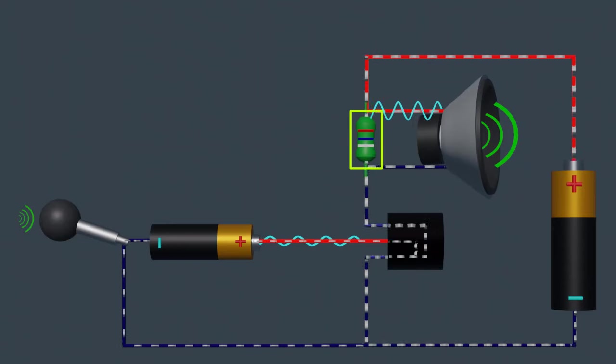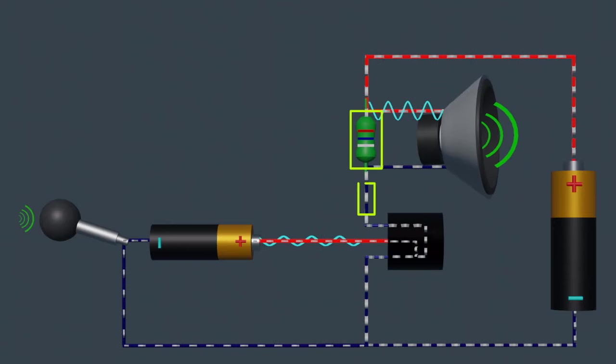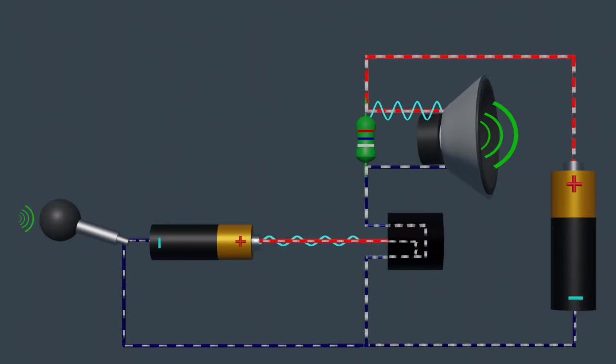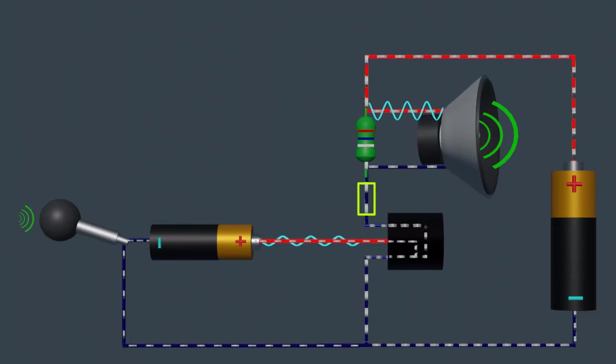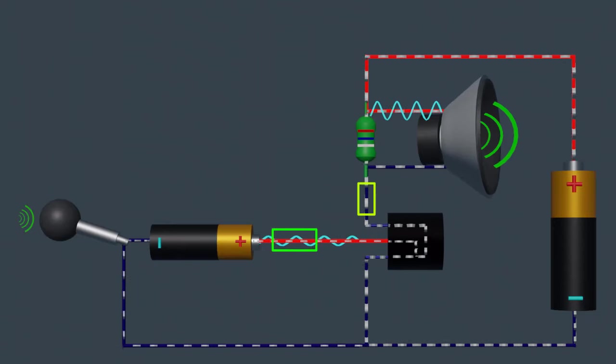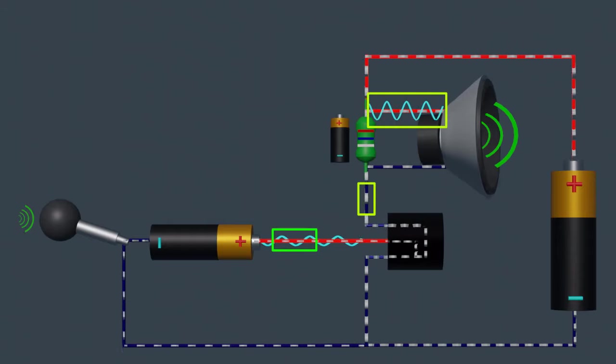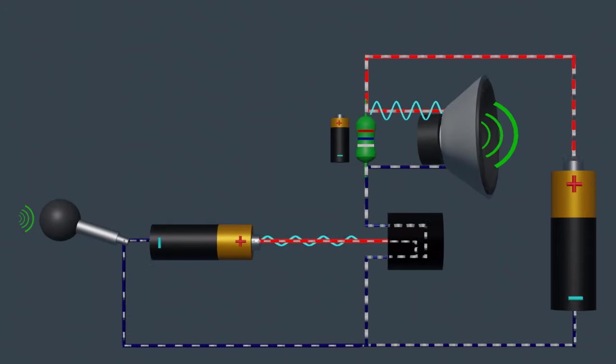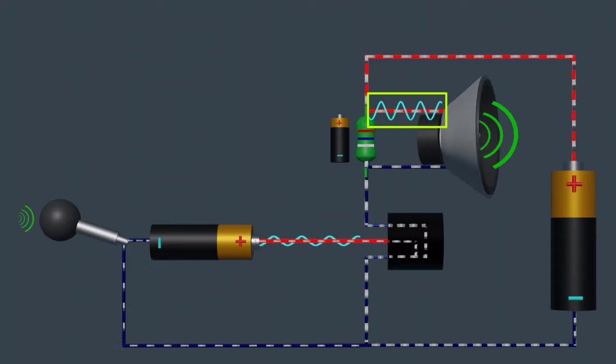To extract the amplified signal, a load resistance is connected in series with the collector terminal. The varying collector current, modulated by the input signal, results in a varying voltage drop across this load resistor. This voltage is the amplified output signal.